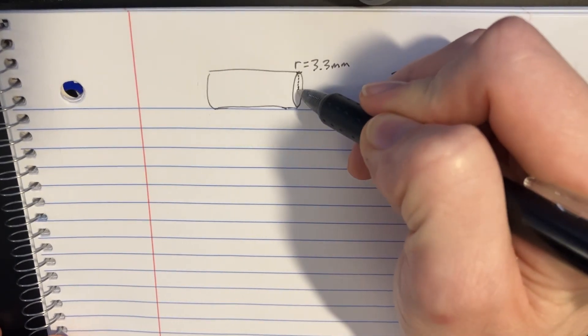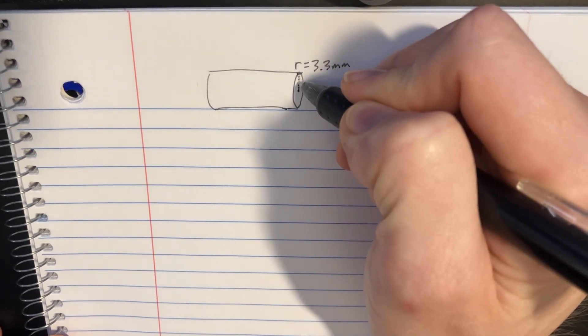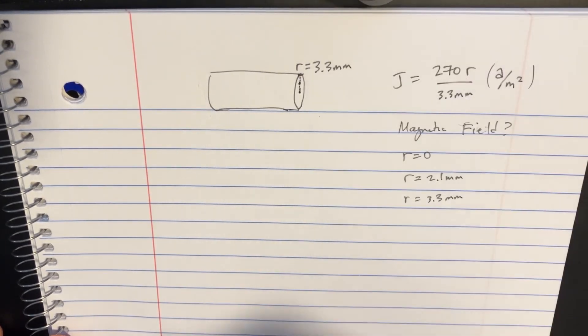We're going to try to figure out the magnetic field at these different points. r equals 0 is going to be like right here, r equals 2.1 is going to be like somewhere over here, and then all the way at the max as well.